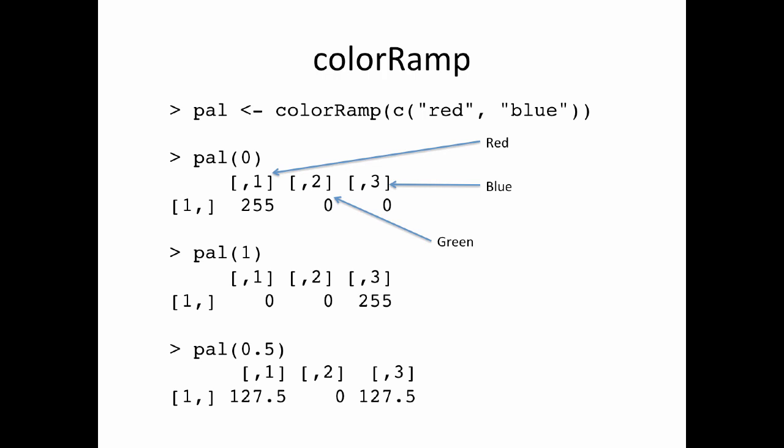When I call pal(0), I get back a matrix with one row and three columns. The three columns represent red, green, and blue. In the first column I've got 255, which is the maximum value — numbers go between 0 and 255, giving 256 possible values per channel. So pal(0) gives me red: maximum red (255), 0 for green, 0 for blue.